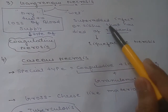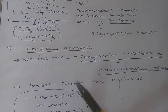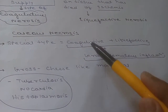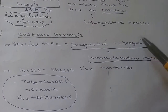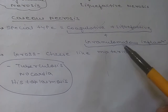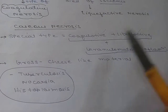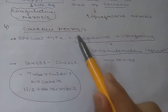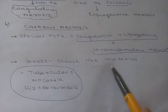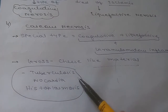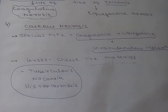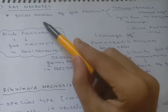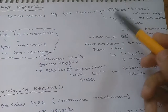Next is caseous necrosis, a special type because it is a combination of coagulative plus liquefactive necrosis along with granuloma formation. In gross examination, caseous necrosis looks like cheese-like material. It is seen in tuberculosis, nocardia, and histoplasmosis.